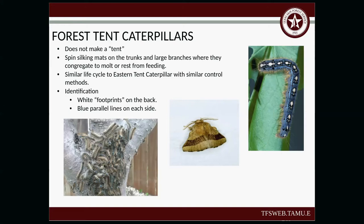The Forest Tent Caterpillar does not make a tent. It forms silky mats on the trunk and large branches where they congregate and rest from feeding. They have a similar life cycle to the Eastern Tent Caterpillars with similar control methods. For identification, if you look on the back of the adult, you see white markings that kind of look like footprints going all the way down the back. They also have blue parallel lines on each side.